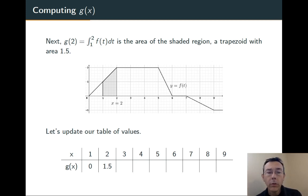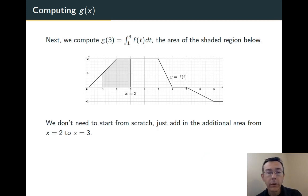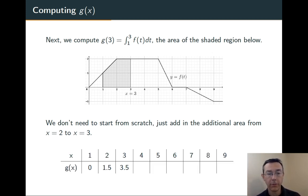Next we compute g(3). We can do this from scratch, or we can just view it as adding the extra 2 units to the area that we already had. In other words, adding the area between t equals 2 and t equals 3. Overall, we're going to get 3.5.